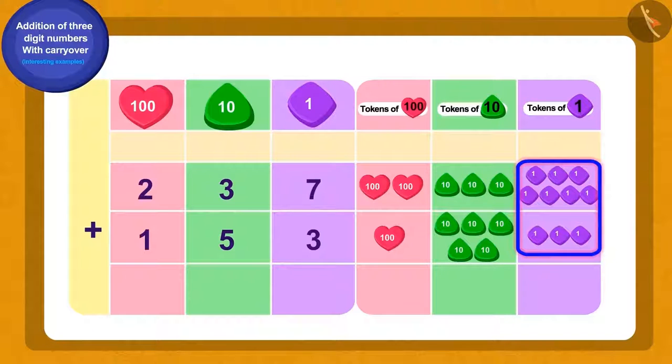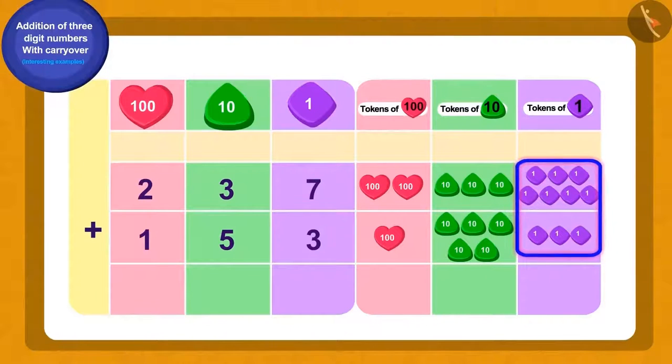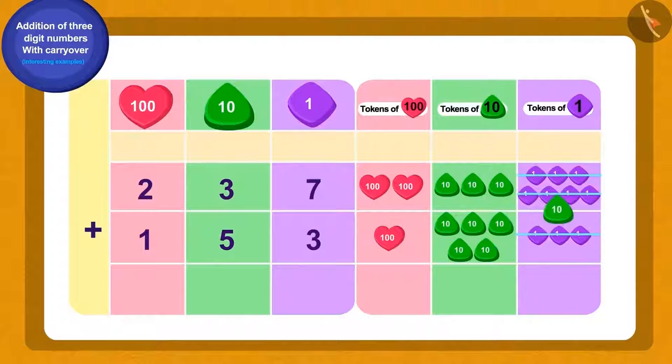237 and 153 will be written using tokens. We have a total of 10 ones tokens. What can we do now? Yes, we will use carry-over. Add 10 ones tokens to make 1 token of tens. We will write this tens token along with the rest of the tens tokens.